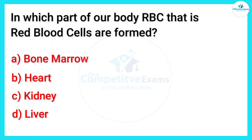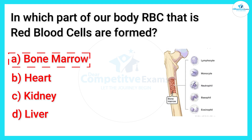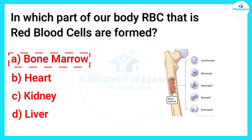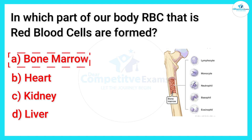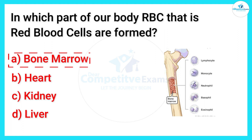The correct answer is bone marrow — that is where red blood cells (RBCs) are formed. Friends, red blood cells contain a protein called hemoglobin which carries oxygen from the lungs to all the parts of our body.